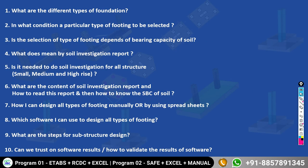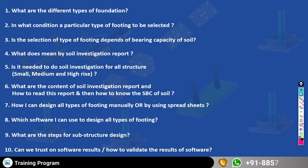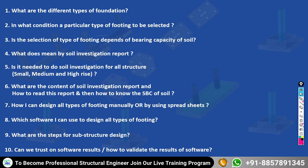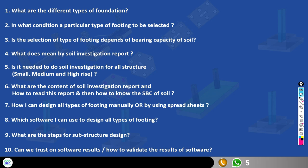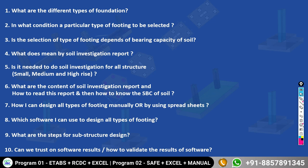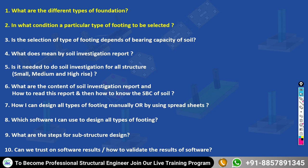First, what are the different types of foundations? There are isolated foundations with pad footing, stepped footing, sloped footing; combined foundation; strap foundation; wall foundation; pile foundation; and pile cap design. The second question is: for a proposed structure — whether it's G+1, G+4, or more than 20-30 floors — what type of foundation will be suitable? Most beginners ask: for any project, which foundation should I choose?